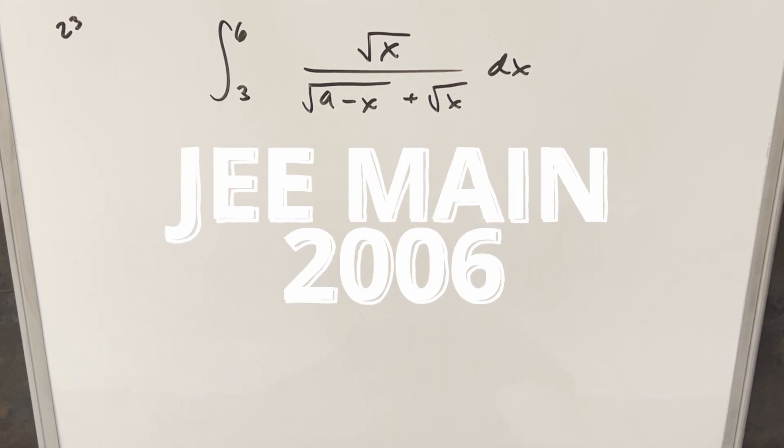Okay, we're attaining another integral. This one's from JEE Main 2006. We have the integral from three to six of square root of x over square root of nine minus x plus square root of x dx.